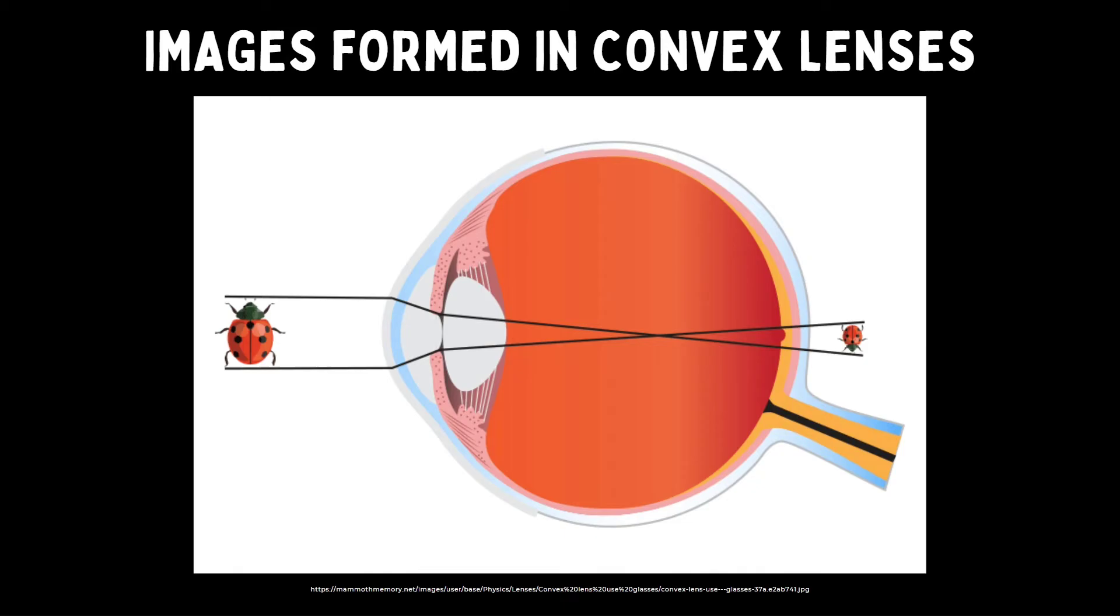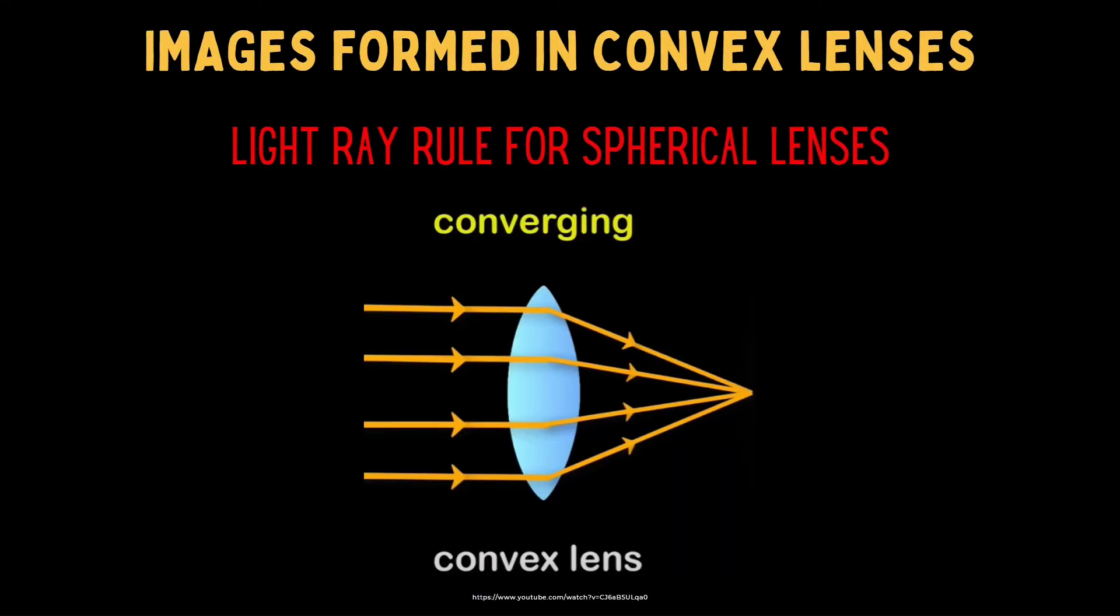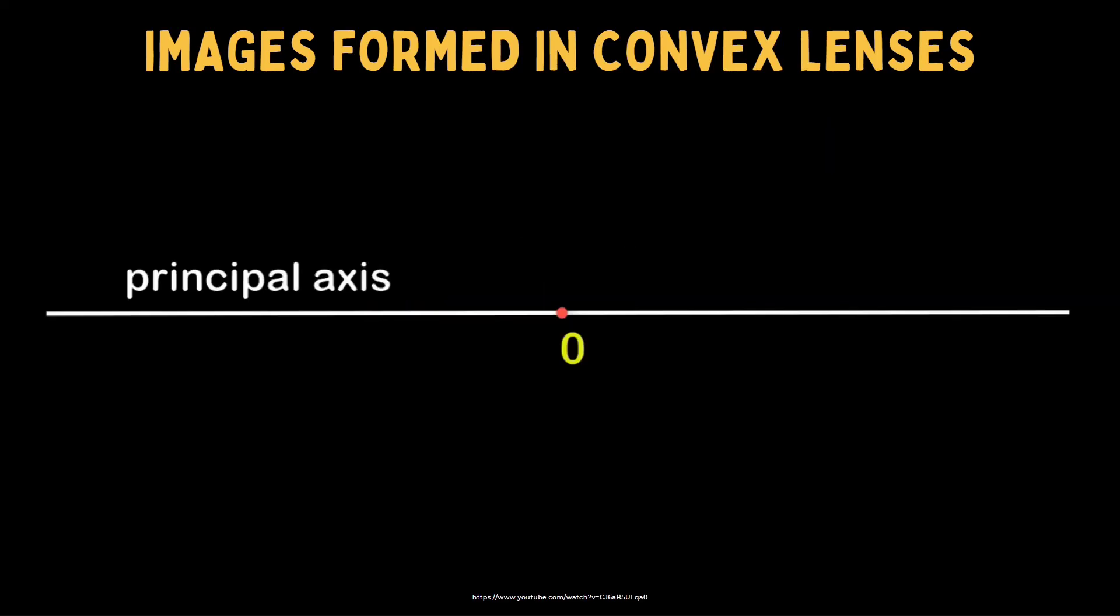Next, how are images formed in convex lenses? We have the light ray rule for spherical lenses. We have here the converging or convex lens. Light will hit the lens and go here. And if you notice, they converge at that point.